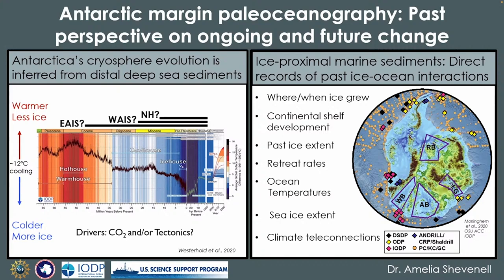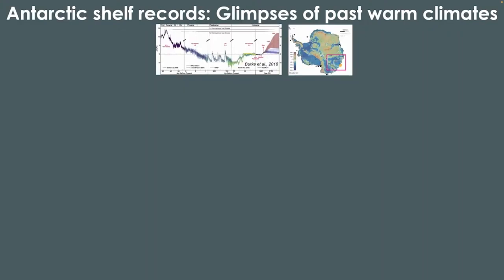We're also able to get sea ice extent and climate teleconnections. This map shows sediment cores and drill cores around Antarctica. What we've learned in the past couple of years is that East Antarctica is a lot more sensitive than we imagined — there's about 19.2 meters of sea level equivalent ice in the marine-based basins around East Antarctica. And so I want to walk you through some successes we've had in the long-term record.